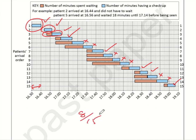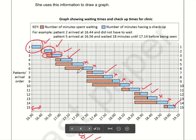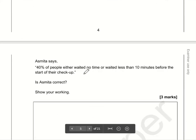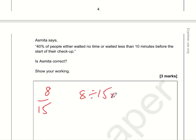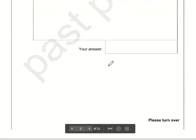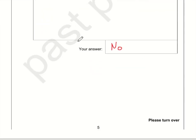Asma says 40% of people waited no time or less than 10 minutes. We worked it out to be 8 out of 15. To convert to a percentage: 8 divided by 15, multiplied by 100, gives 53.3 recurring percent. So is Asma correct? No, she is not correct — it's 53%, not 40%.